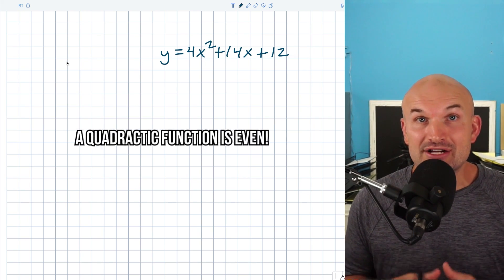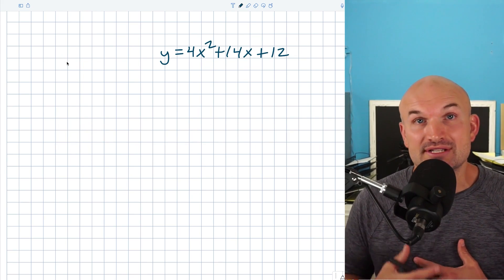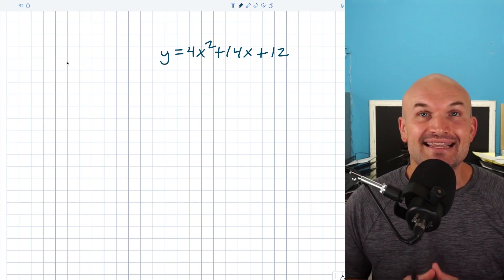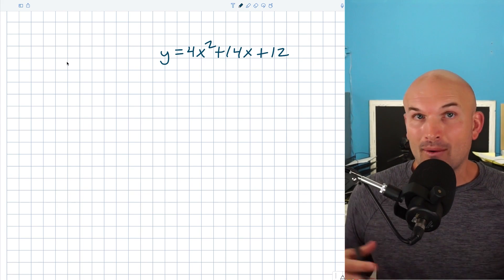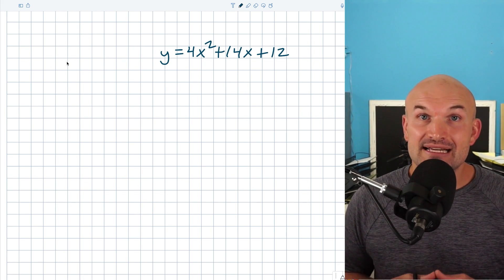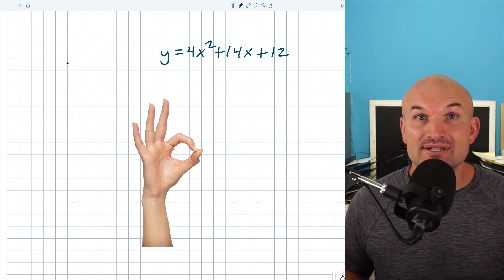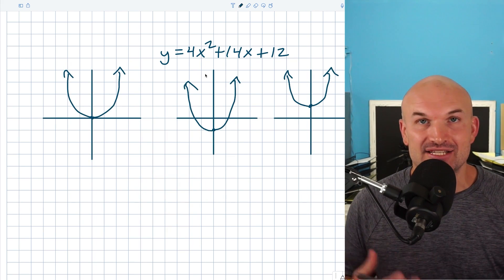But it's very important to understand that a quadratic function is even, meaning it's always going to cross the y-axis. However, that does not necessarily mean it's always going to cross the x-axis. When we look at the parabola, the graph of the quadratic, it can sometimes cross it once, twice, or zero times. How can we identify these x and y intercepts quickly?